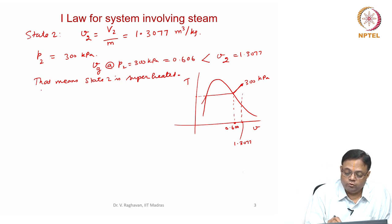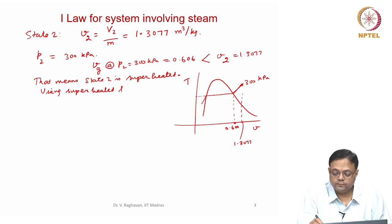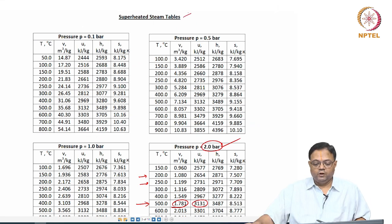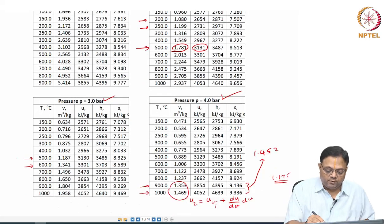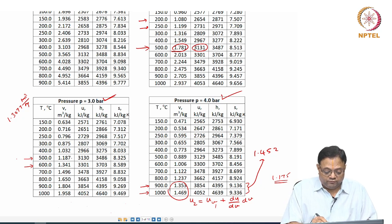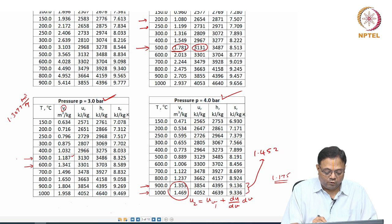Using the superheated steam tables for a pressure of 300 kilopascals — that is 3 bar — we look at the entries for specific volume. At 500°C, V = 1.187 m³/kg, and at 600°C, V = 1.347 m³/kg. Since our value of 1.3077 lies between these, we need to interpolate between these two temperatures.